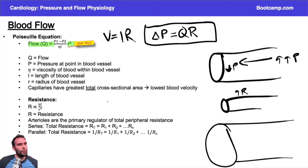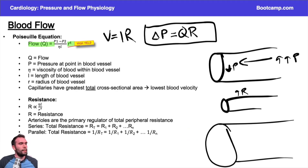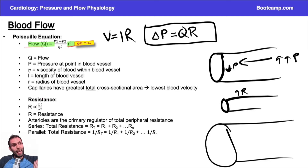For example, if resistance is 32 and you double the radius, the flow goes up by a factor of 2 to the fourth, which is 16. Since resistance is inversely proportional to radius to the fourth power, 32 divided by 16 gives a resistance of 2. So the big point: radius is proportional to flow and inversely proportional to resistance. Doubling the radius changes flow by a factor of 16 and resistance by a factor of 16.